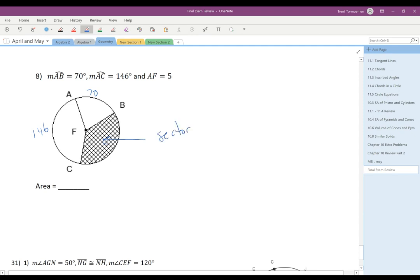A sector is just part of a circle. The way we find the area of a sector is it's always going to be the arc, the measure of the arc for that sector. So in this case,